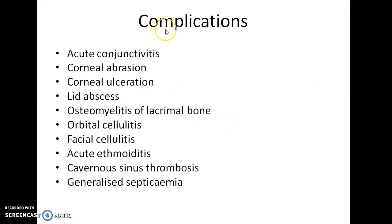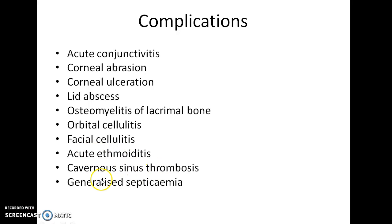Now what are the complications of Acute Dacryocystitis? If it is not treated adequately, it can lead to acute conjunctivitis, corneal abrasion, corneal ulceration, lid abscess, osteomyelitis of the lacrimal bone, orbital cellulitis, facial cellulitis, acute ethmoiditis, cavernous sinus thrombosis, and generalized septicemia.